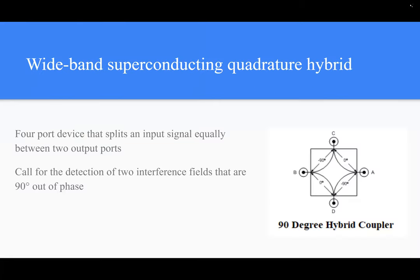First, we have our wideband superconducting quadrature hybrid. This device, as you can see in this schematic to the right here, is a four-port device that splits an input signal equally between two output ports. So if we have signal coming in from A, we would have signal going out of C and D of equal amplitude, but with 90-degree phase shifts. And B is just an independent port.